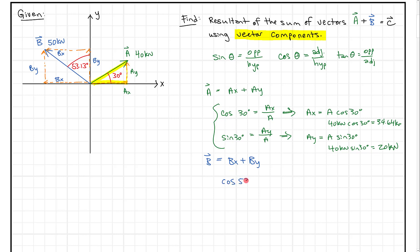Taking the cosine of 53.13 degrees, we might be tempted to say it's BX over B, but the adjacent to the 53.13-degree angle is actually BY. So cosine of 53.13 equals BY over B, meaning BY equals B times cosine of 53.13 degrees. That gives us 50 times cosine of 53.13 degrees, which equals roughly 30 kilonewtons.